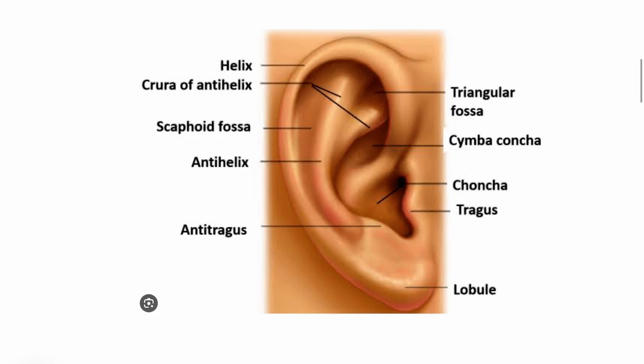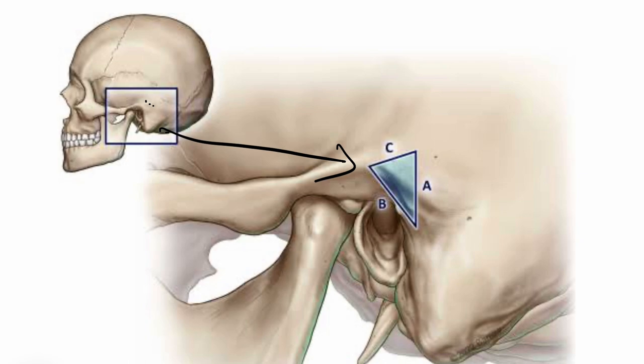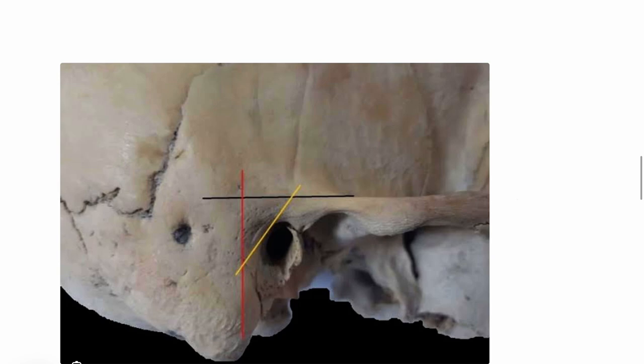This McEwen's triangle can be palpated via the cymba concha — a structure which can be seen on the external ear. If you palpate just behind this on the skull, in the temporal bone, you can see in this diagram this triangle ABC, which is known as the Suprameatal triangle.